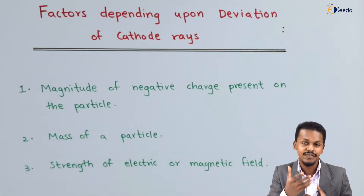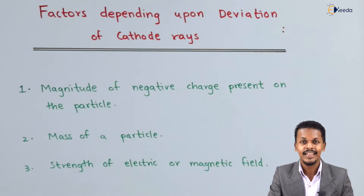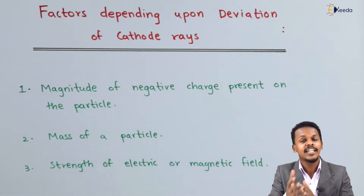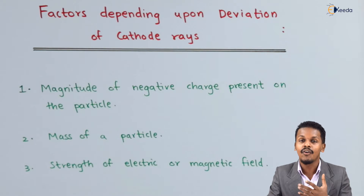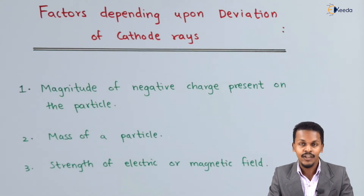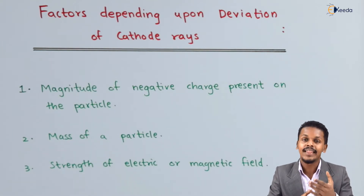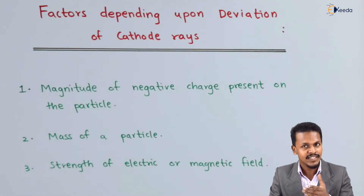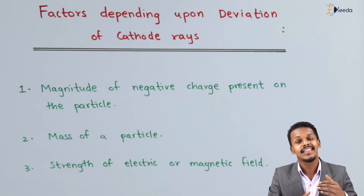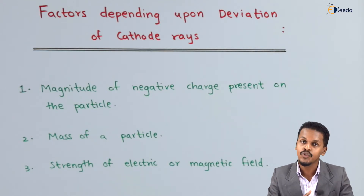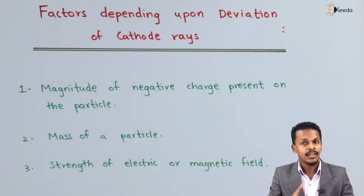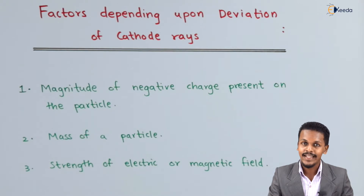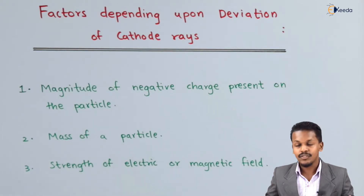For example, if there is more negative charge or more positive charge on the particle, the magnitude of the charge present on a particular particle will be influenced by the electric field as well as the magnetic field, and that's the reason the deviation will also be more.